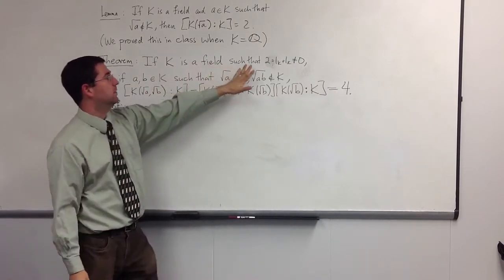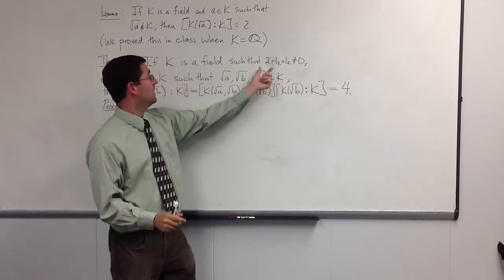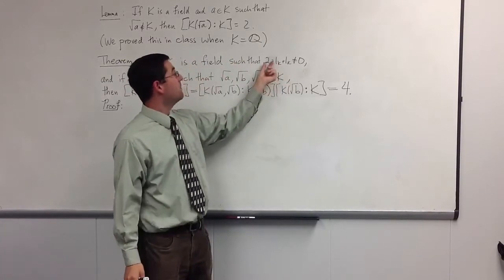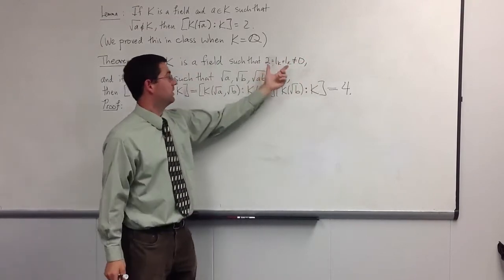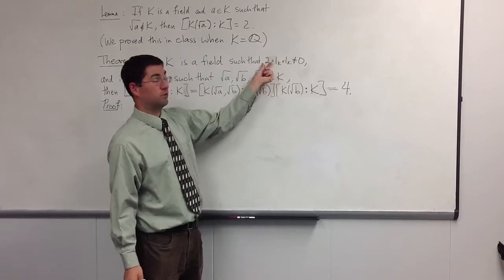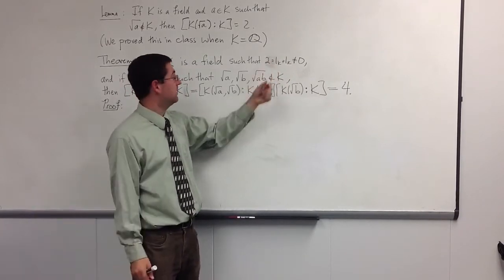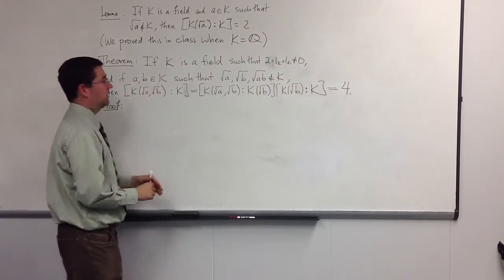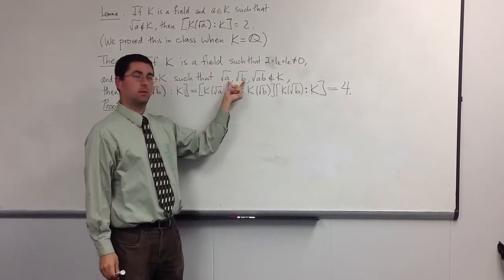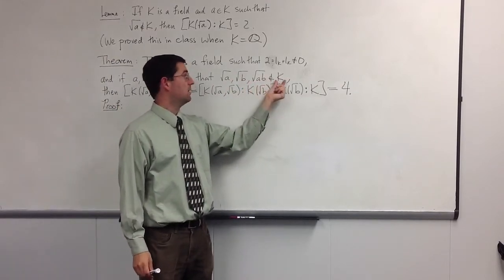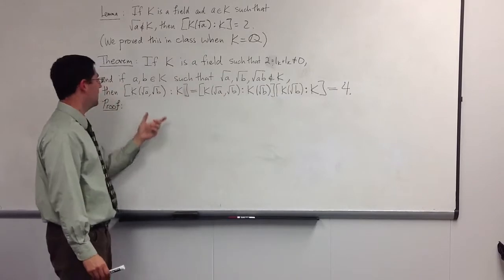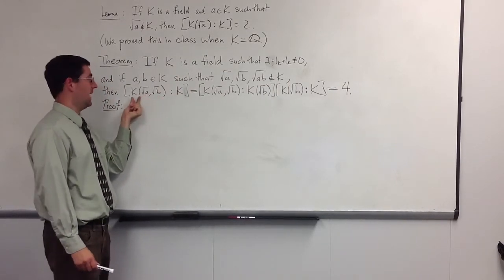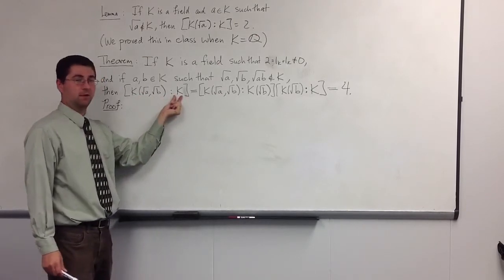The theorem says that if you have a field whose characteristic is not 2 — meaning that the number 2, which means 1 plus 1, is not actually 0 in the field — then if you take two elements such that the square root of each, along with the square root of their product, is not in the base field k, the field extension obtained by adjoining √a and √b to k has dimension 4 over k.